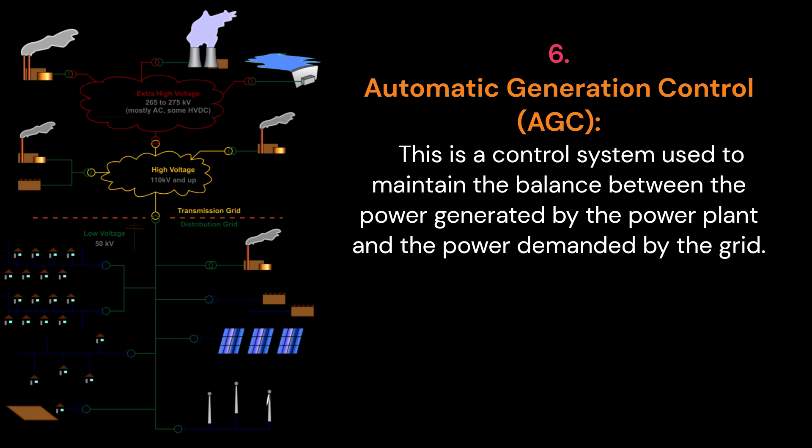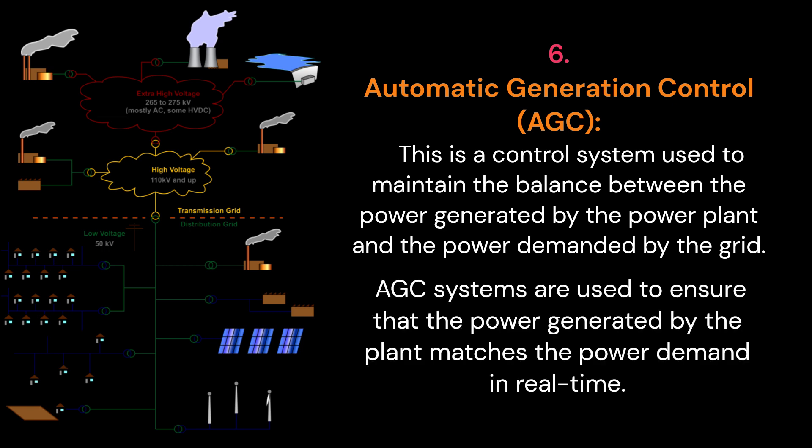6. Automatic Generation Control, AGC. This is a control system used to maintain the balance between the power generated by the power plant and the power demanded by the grid. AGC systems are used to ensure that the power generated by the plant matches the power demand in real time.